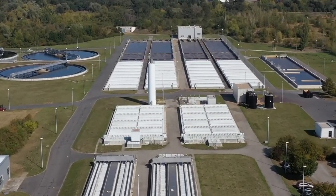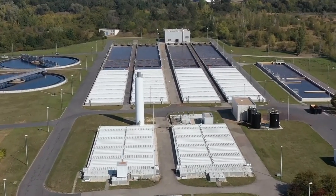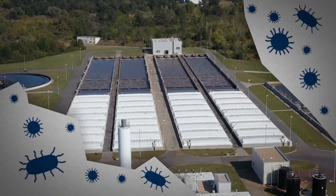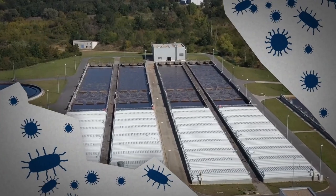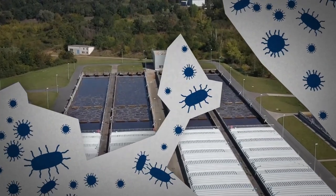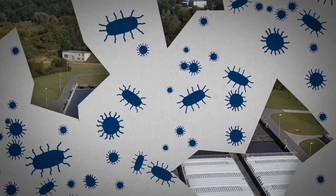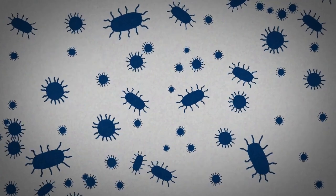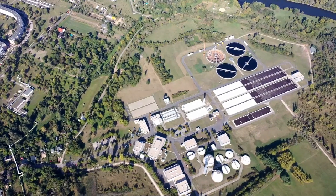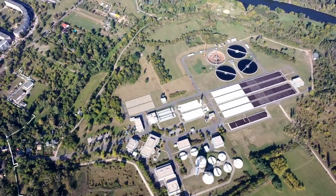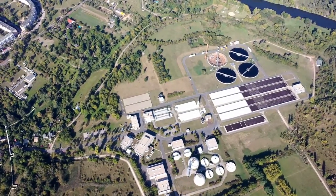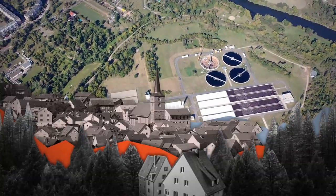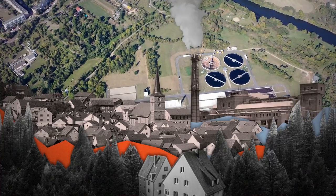A difference from naturally occurring water bodies is that in wastewater treatment plants, a near-perfect environment can be created for bacteria and microorganisms to thrive. This increases their number to a maximum and highly accelerates the natural self-purification process. The size of a treatment plant depends on the amount of wastewater occurring. Typically, the wastewater to be treated stems from domestic, municipal and industrial use, as well as from rainfall.